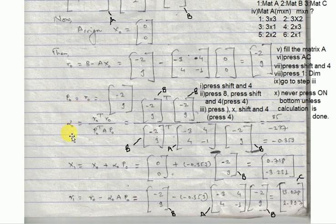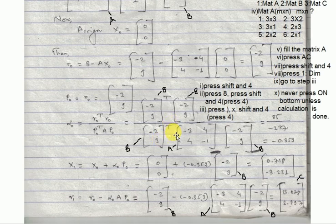Alpha naught is a scalar constant. The formula is: alpha_0 = (R0 transpose × R0) / (P0 transpose × A × P0). R0 is [-2, 9] and P0 is also [-2, 9]. A has values [-3, 4; 4, -1]. We now compute this in the calculator.